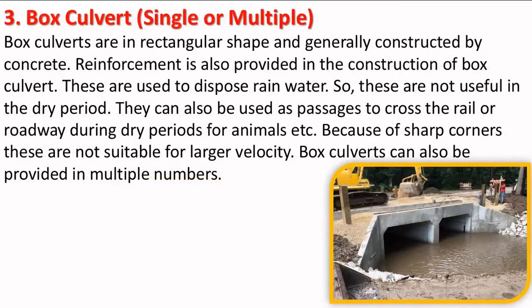Next is box culverts — single or multiple. Box culverts are rectangular in shape and generally constructed using concrete. Reinforcement is also provided in the construction of box culverts. These are used to dispose of rainwater, so they are not useful in dry periods. They can also be used as a passage to cross rail or roadways during dry periods for animals. Because of sharp corners, these are not suitable for larger velocities. Box culverts can also be provided in multiple numbers.